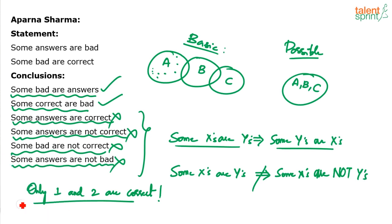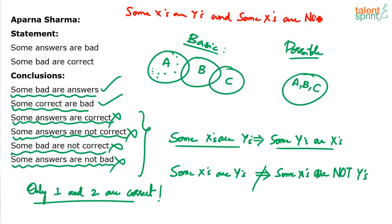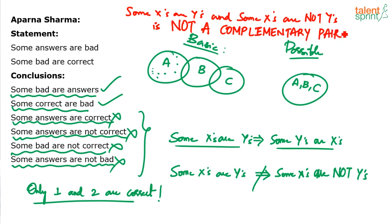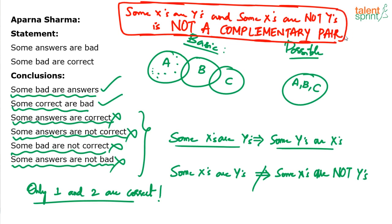I'll mention it once again and highlight that in red: some X's are Y's and some X's are not Y's is not a complementary pair — very very important point, because I have seen a lot of you getting confused with this. Some A's are B's and some A's are not B's — it sounds like a complementary pair but it is actually not. So don't consider some answers are correct and some answers are not correct to be a complementary pair. There are only two complementary pairs in syllogisms: some A's are B's and no A is B is one, and all A's are B's and some A's are not B's is the other.